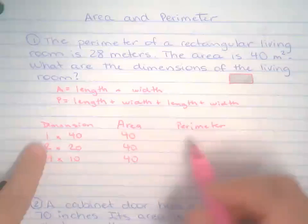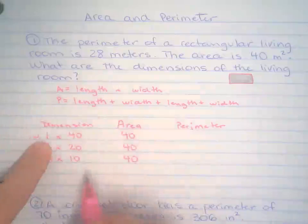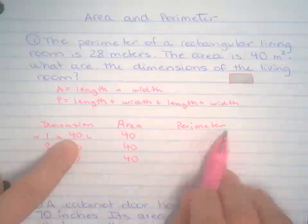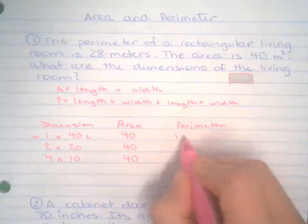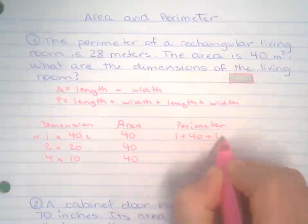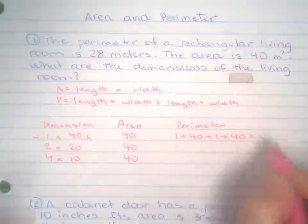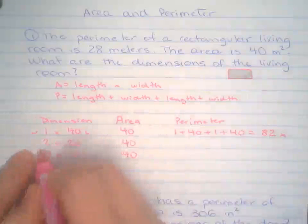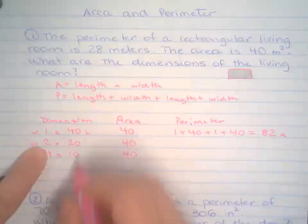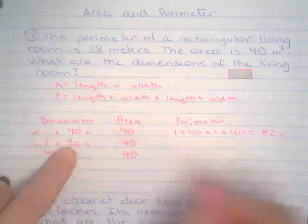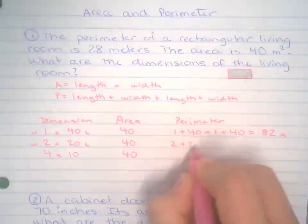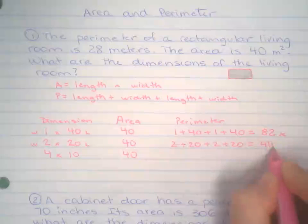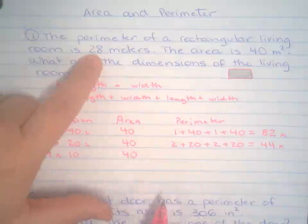If I have that the width of the room is 1 and the length is 40, we're going to find the perimeter for that. So 1 plus 40 plus 1 plus 40. That will give me the perimeter of 82. So, nope, that's not it. Let's try with the width of 2 and the length of 20. So 2, 20, 2, 20. And I add them up. I get 44 right there. Still not the 28 that I'm looking for.